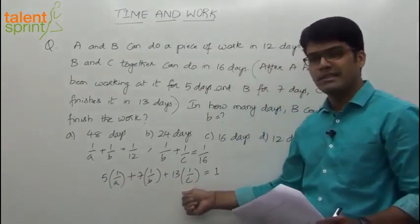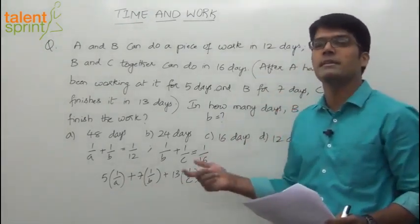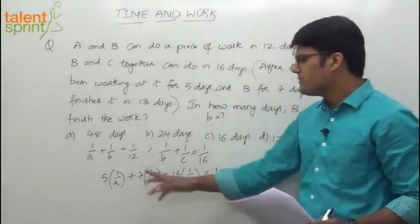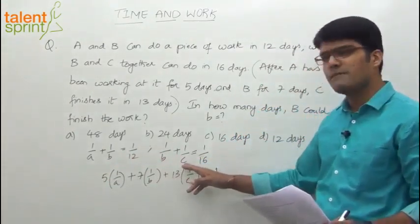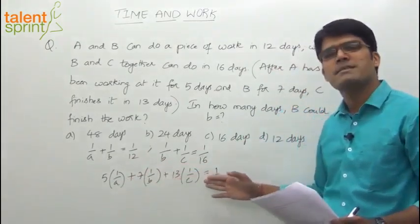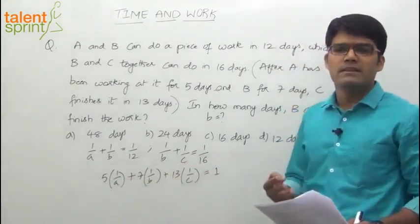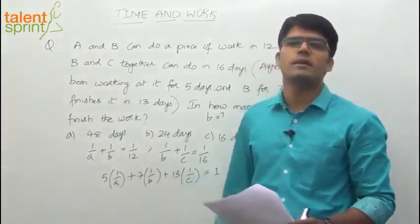A for 5 days, B for 7 days, C for 13 days. That finishes the total work which is generally considered as 1 unit. We are following unit work method. So if you get it, we have 3 equations: 1 by A plus 1 by B equals 1 by 12, 1 by B plus 1 by C equals 1 by 16, and 5 by A plus 7 by B plus 13 by C equals 1. Three equations with 3 variables: A, B, and C.